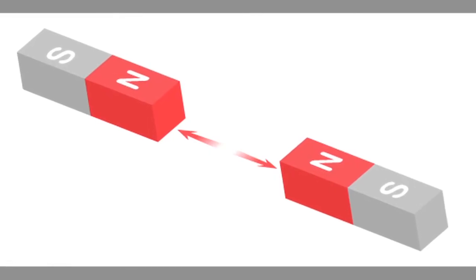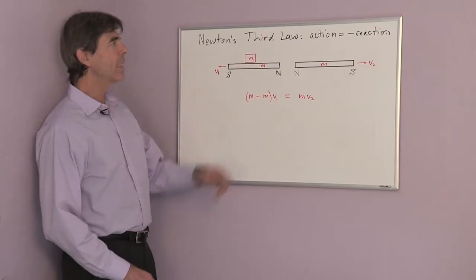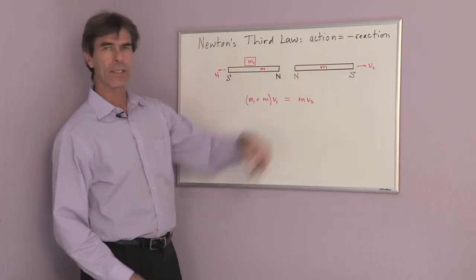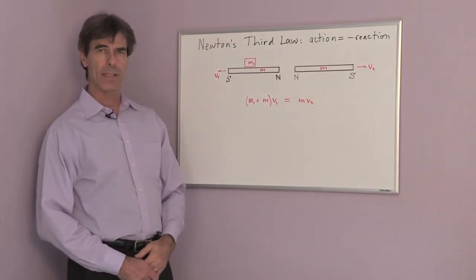Newton's third law of motion states that every action has an equal but opposite reaction, which we express in the equation action equals minus reaction. And if we want to use magnets to demonstrate this,